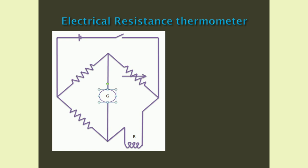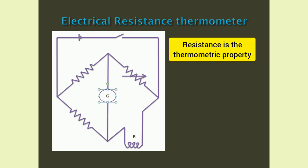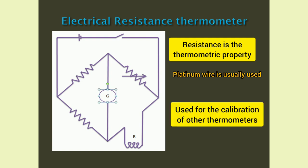Electrical resistance thermometer. Here, the resistance of the metal wire varies with temperature, and so resistance is the thermometric property. Usually, a platinum wire is used and is incorporated in a Wheatstone bridge circuit. The variation in resistance with temperature is recorded. It has a high degree of accuracy and sensitivity, and is used for calibrating other thermometers.